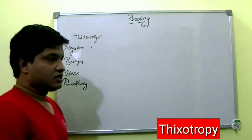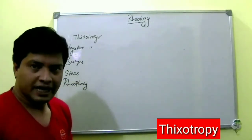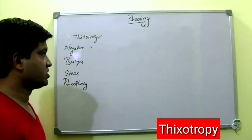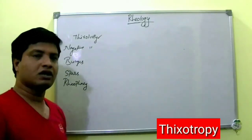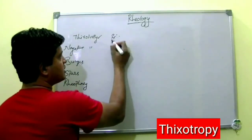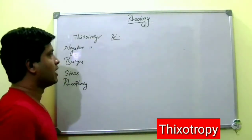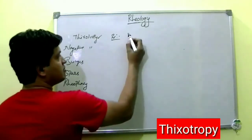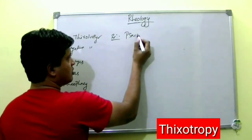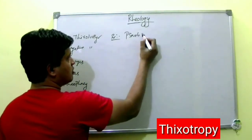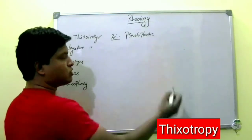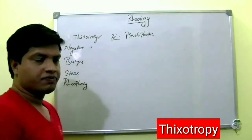For thixotropy, we will take an example, see the mechanism, create the definition, and also draw the graph. The example for thixotropy is a pseudoplastic system.